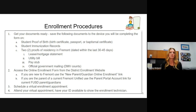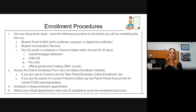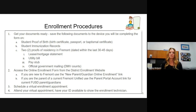Acceptable proof of residency includes a lease, a mortgage statement, utility bill, pay stub, or official government mailing including DMV documents. To access the online enrollment form, go to the district enrollment website. If you're new to Fremont, use the new parent/guardian online enrollment link. If you are a parent of a current Fremont Unified student, use your parent portal account to access the enrollment page and enroll through the parent portal.